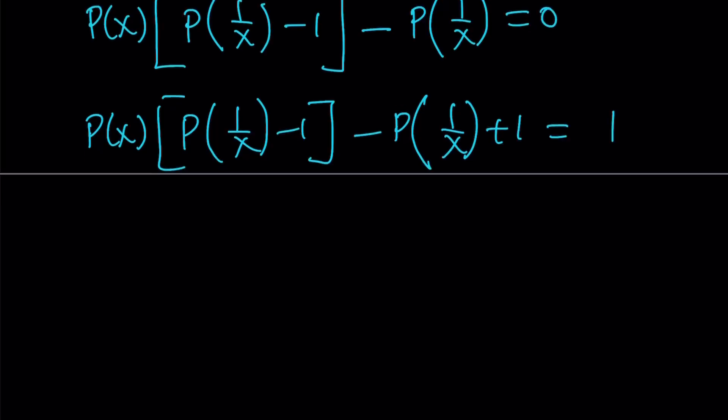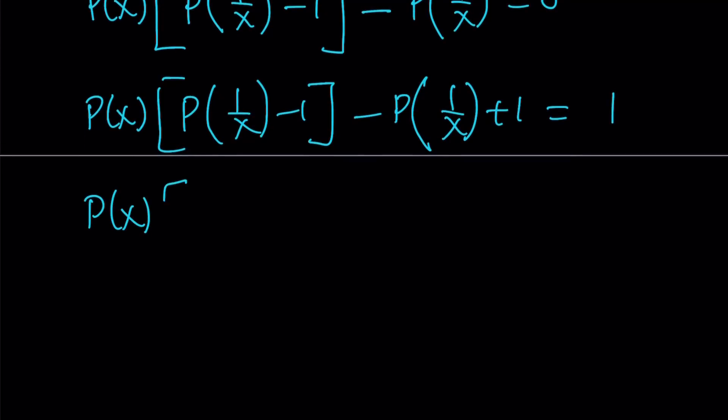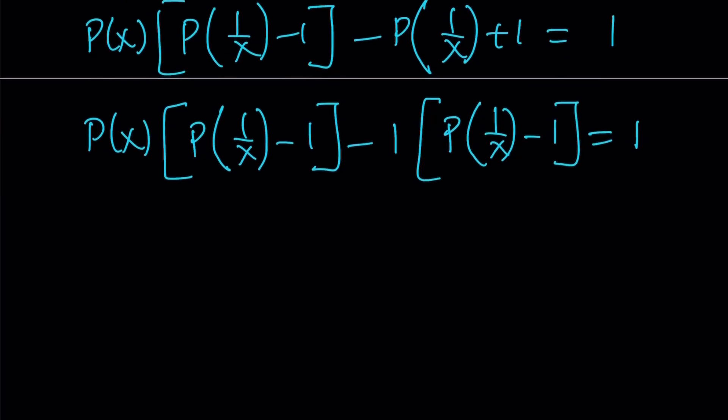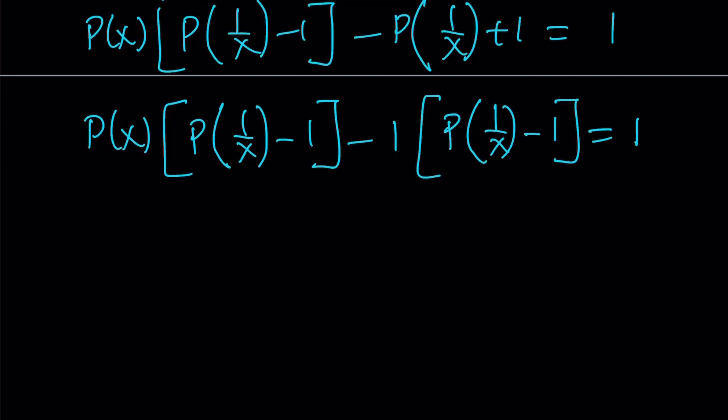Now, we're going to take out a negative 1, and then we're going to have a common factor. Great. Now, this is factorable by grouping. So let's go ahead and take out the common factor, which is P of 1 over X minus 1. Or we can just write it the other way around. P of X minus 1 multiplied by P of 1 over X minus 1 equals 1.